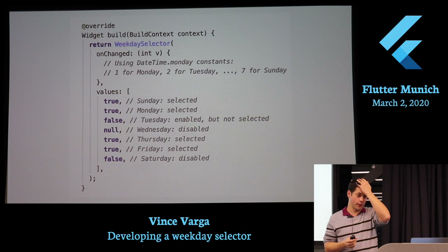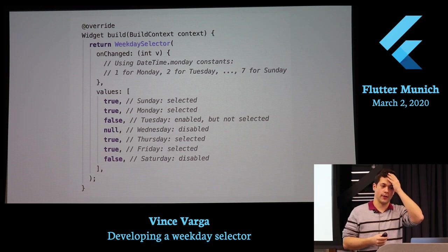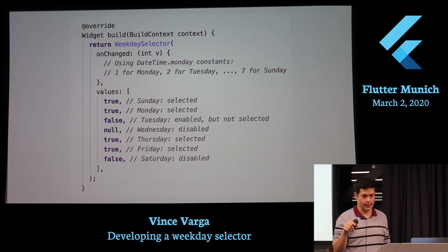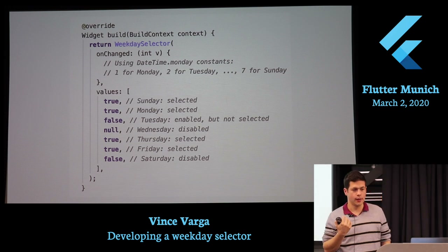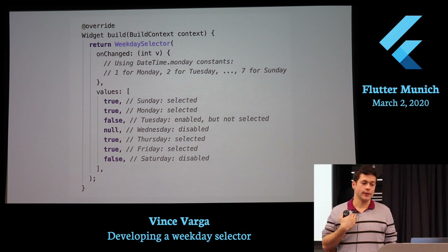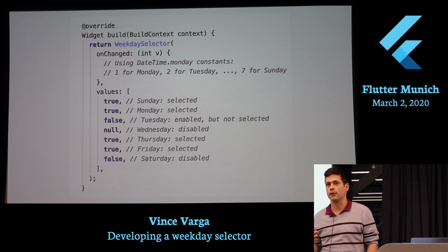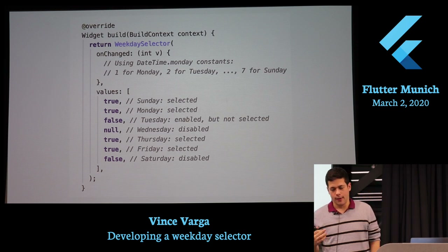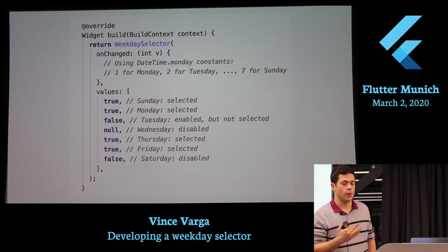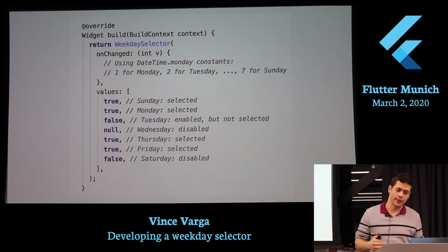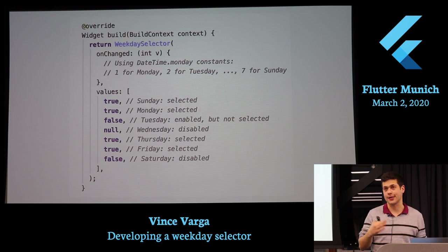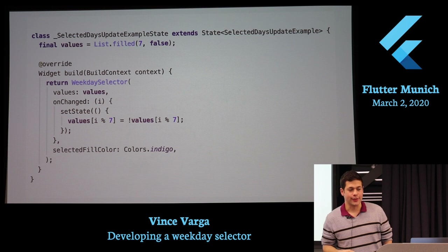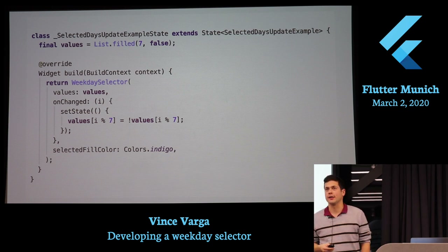In the onChanged callback, you receive an integer which stands for the day the user tapped on. I'm using the DateTime constants — so Monday is the integer value 1, Sunday is 7. There is no zero in the DateTime constants.